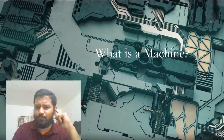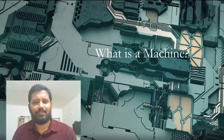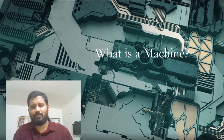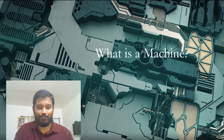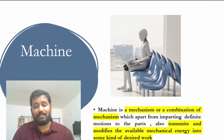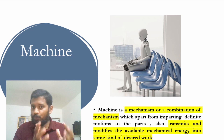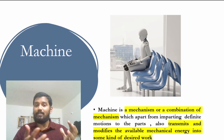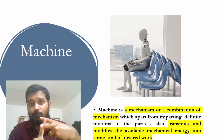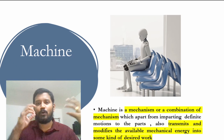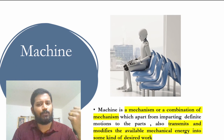Moving forward, what is a machine? When you hear the word machine, a lot of things come to mind — a car, a mixer grinder, a fridge, or a TV. In kinematics, a machine is a mechanism or combination of mechanisms which together imparts definite motion to its parts, as well as transmits and modifies energy, and gives out a desirable work. A machine is a combination of mechanisms that transforms energy and imparts definite motion between its links.